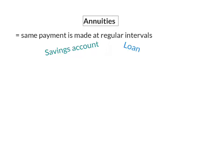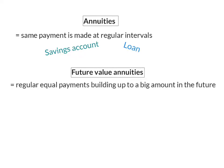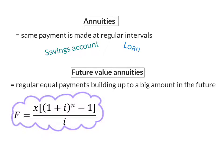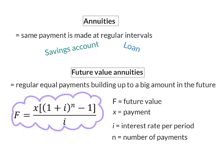Today, however, we are focusing on future value annuities. This is when you have regular equal payments that build up to a big amount in the future. For future value annuities, we have a new formula. The F is for the collective value in the future. The X is the value of the regular payment you will make. I is still the interest rate per period. But now there's a difference. N is not the number of periods anymore, but now the number of payments.